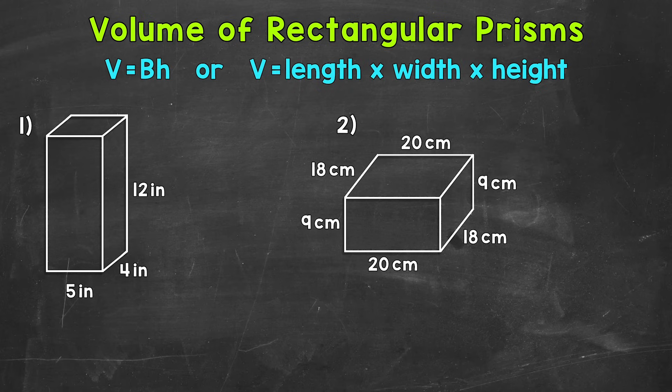So we can use the formula length times width times height for rectangular prisms. So instead of the capital B, we can be more specific and put in length times width.